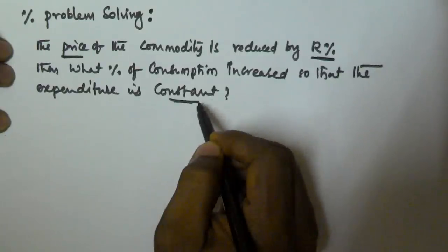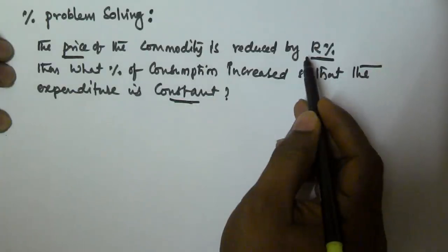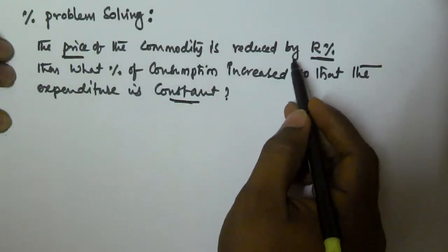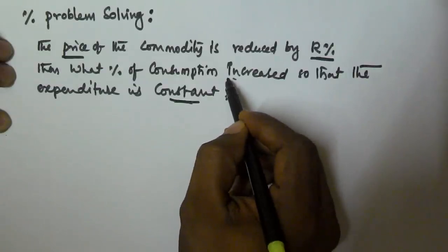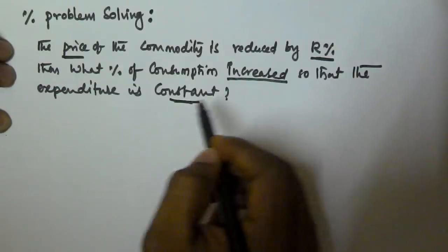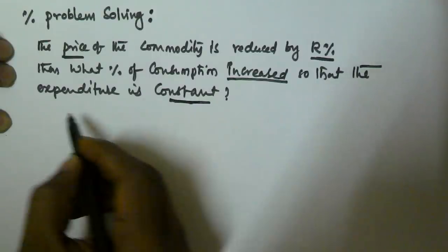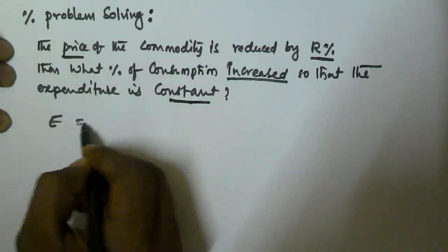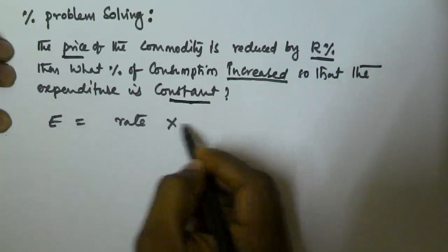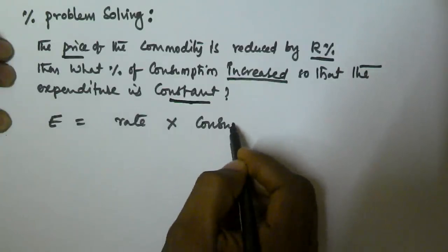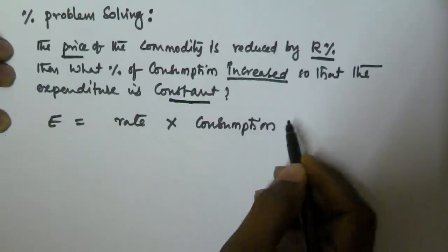We will focus on the case where the price of the commodity is increased by R% — what percentage of consumption must be changed so that the expenditure is constant? As we know, expenditure is equal to rate of the commodity multiplied by consumption.